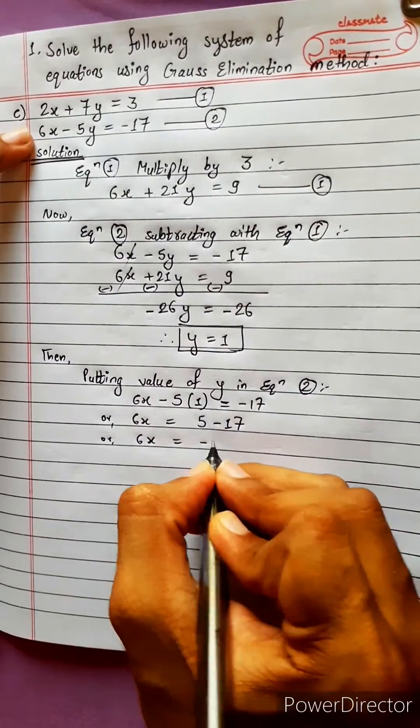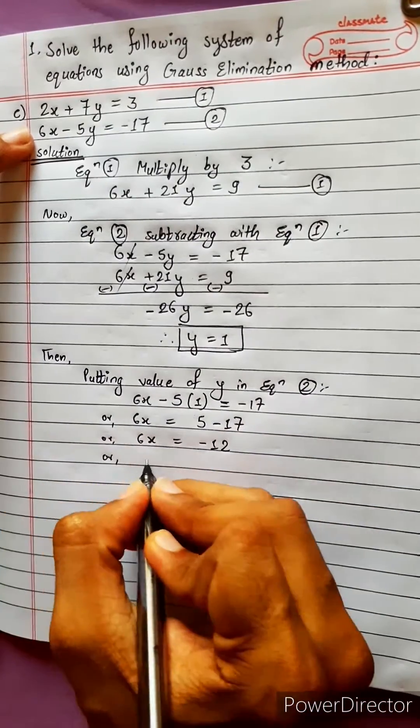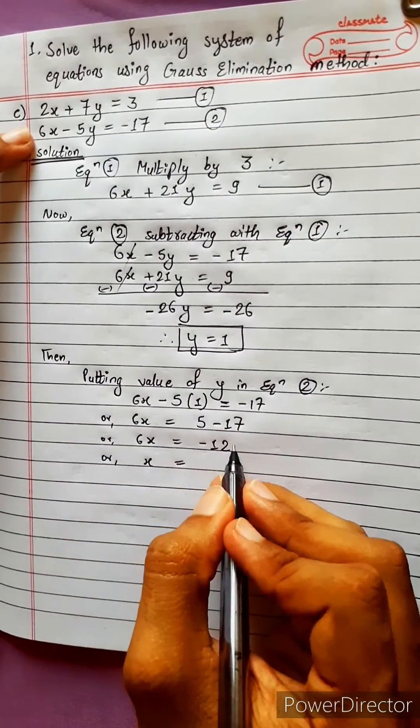Or 6x equals minus 12. Or x equals to, it will divide by 6, minus 2.